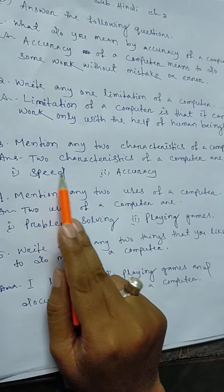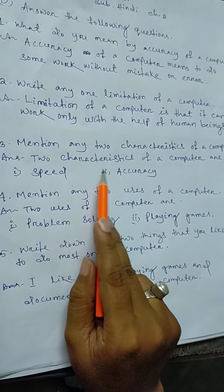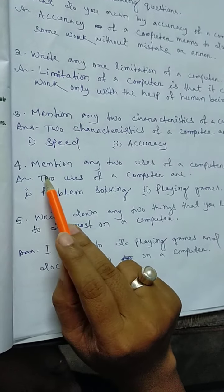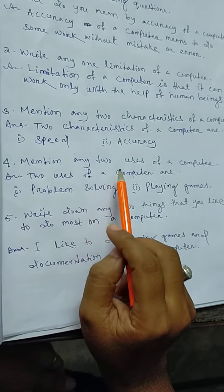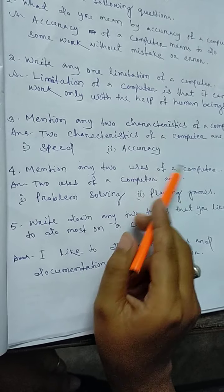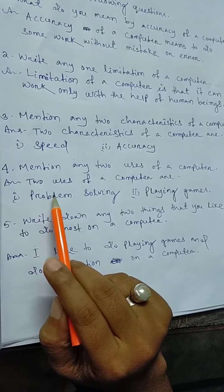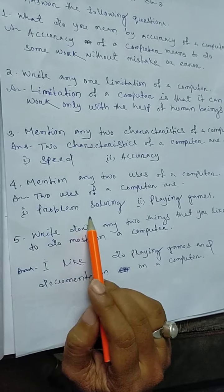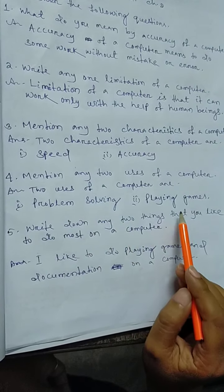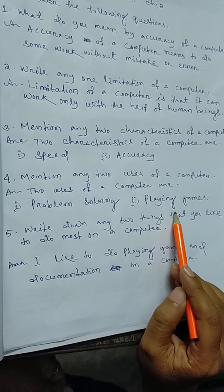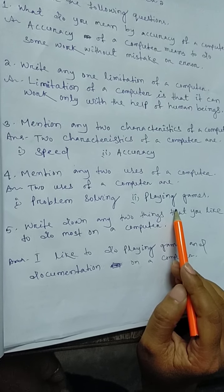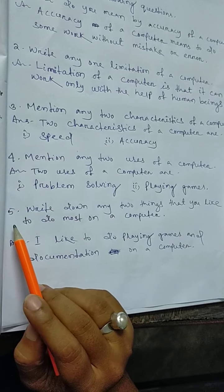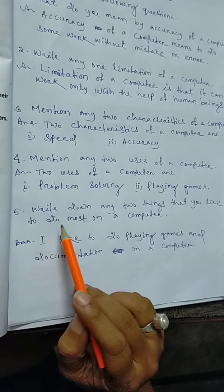The two characteristics of a computer are speed and accuracy. The fourth question is: Mention any two uses of a computer. The two uses of a computer are problem solving and playing games. You can also write another option.